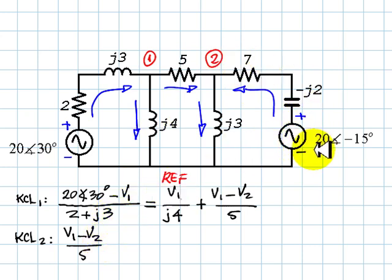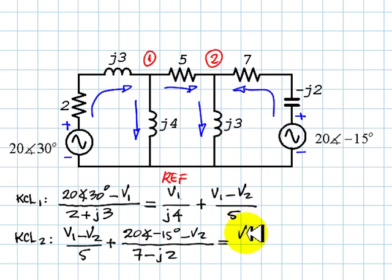Which would be this voltage minus V2 divided by this impedance 7 negative J2, plus this current, which is 20 with an angle of negative 15 degrees minus V2, divided by 7 negative J2, and that is equal to the current in this vertical branch V2 over J3. And those are the two equations we need to solve.